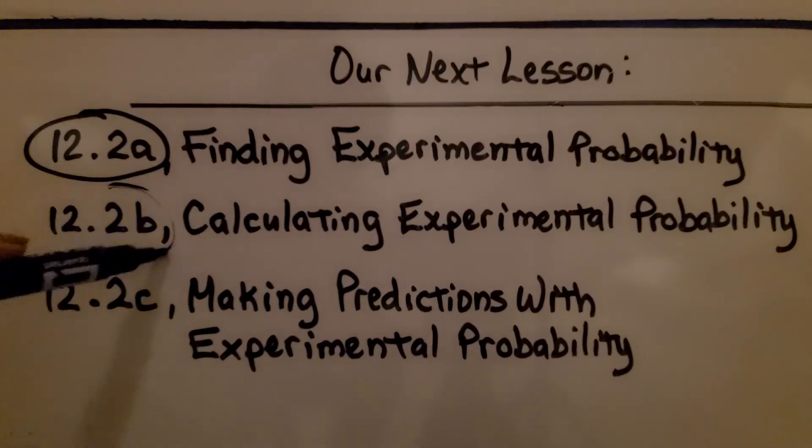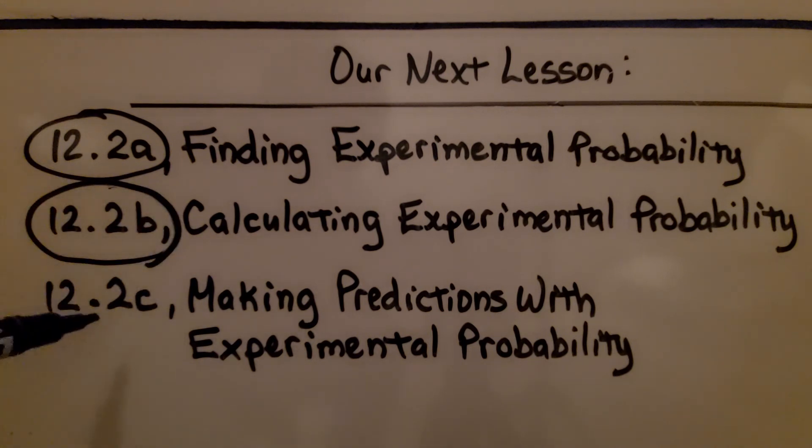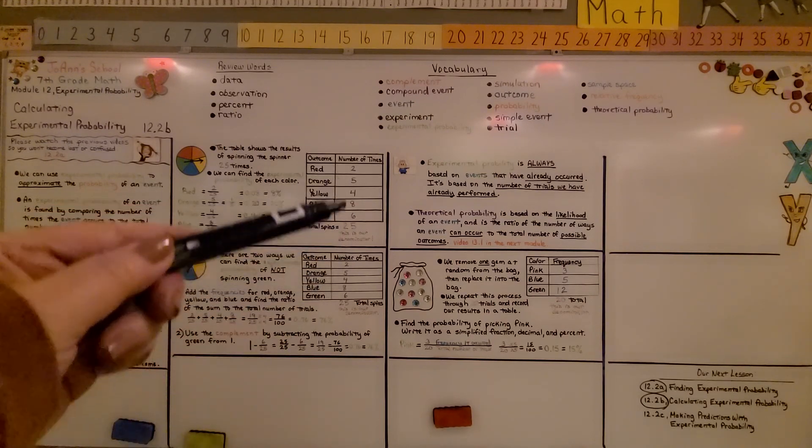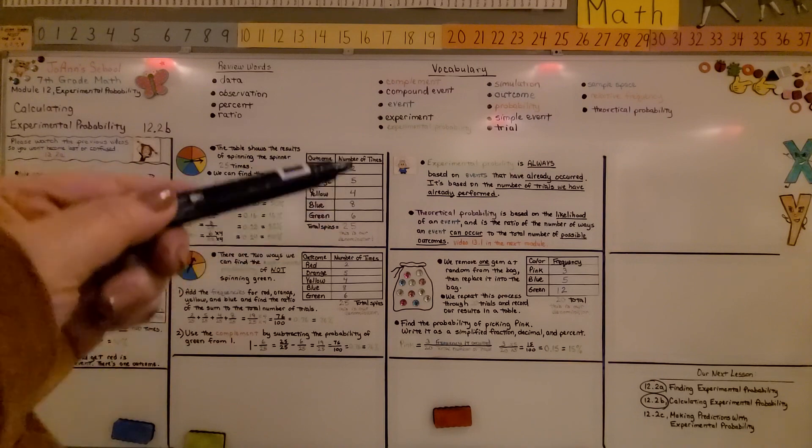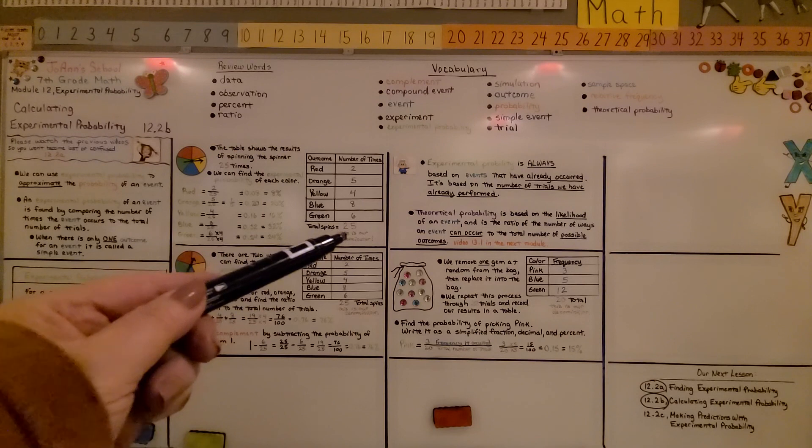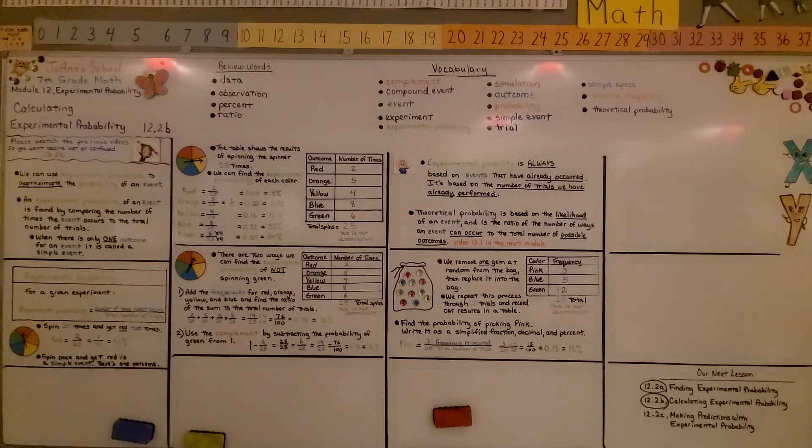We've finished this lesson, we're going to move on to the last part, which is making predictions with experimental probability. So remember, as you're doing this, we need to add up all the times, the frequencies, for the number of trials, and that total number is going to be our denominator. Have a wonderful day. Join me for the last part of the lesson. Bye.